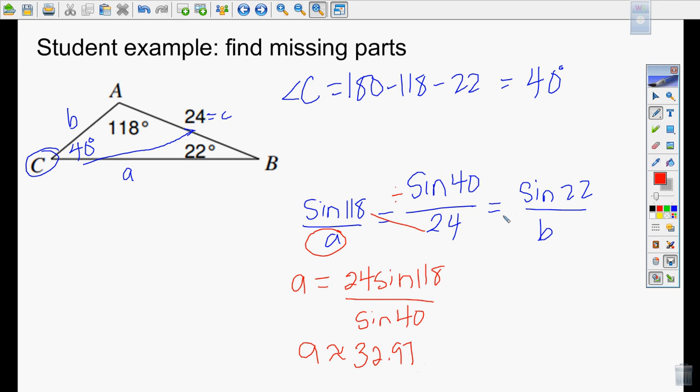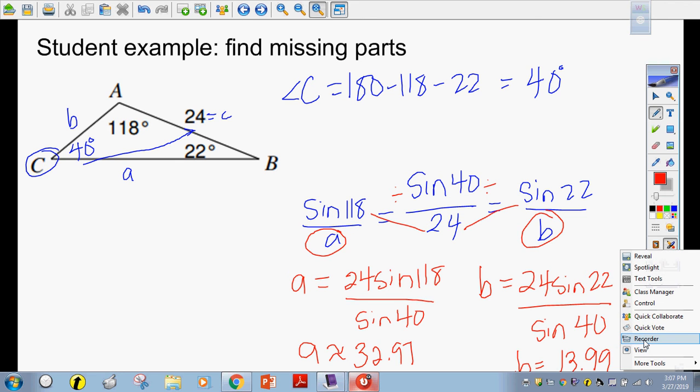B? Cross-multiply. It's exactly like this. B equals 24 sine of 22 divided by sine of 40. And B equals 13.5. And boom, bam, we are done. So if we're not going to do it tomorrow, you guys are going to do it.